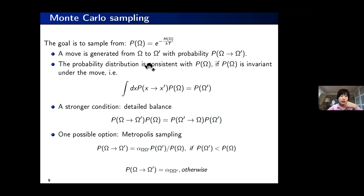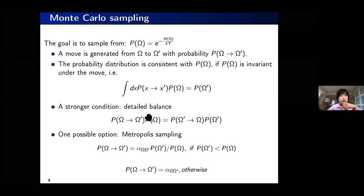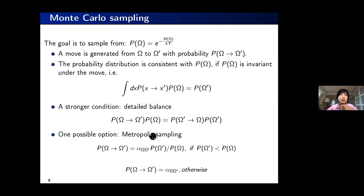Starting from a point in phase space, we make a move from omega to omega prime with a certain probability. If the probability p(omega) is invariant under this move, we end up sampling the correct Boltzmann distribution. In practice, we impose a stronger condition called detailed balance: for two microstates omega and omega prime, the ratio of moves between them should equal the ratio of their probabilities.